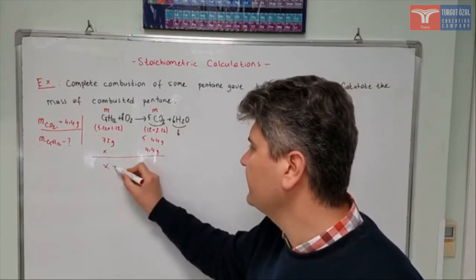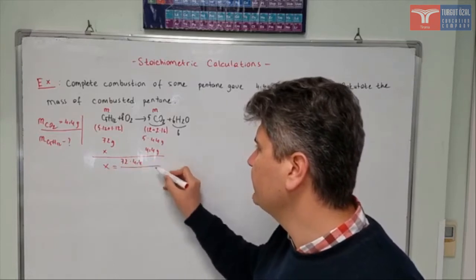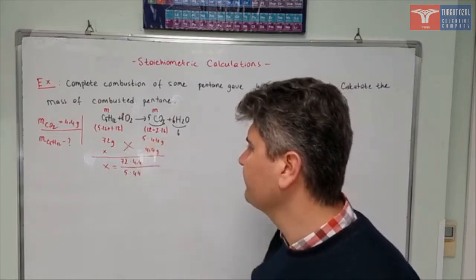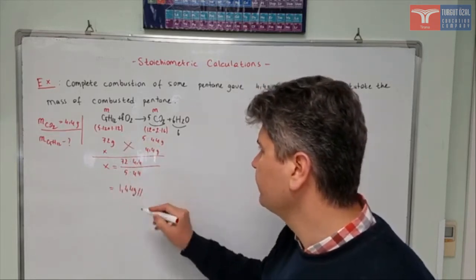you'll find it as 72 times 4.4 divided by 5 times 44. Then if you make your calculation, you'll find the answer as 1.44 grams.